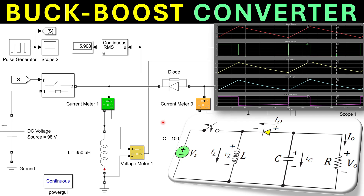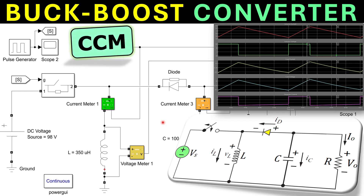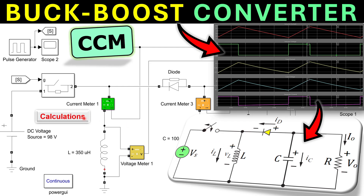Welcome to a new video about power electronics. In this video we will discuss the buck-boost converter, having previously discussed the buck and boost converters separately. Now we will combine both effects in the buck-boost converter operating in CCM mode, continuous current mode. We will see how to generate these plots in Simulink, determine the circuit parameters, and verify everything step by step through calculations and MATLAB Simulink simulations.